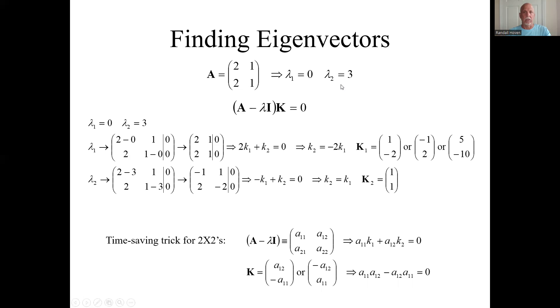Let's do the second eigenvector, which is three. Here I'm going to subtract three off the main diagonals. I'll end up with this augmented matrix. If I use the top row, this means minus k1 plus k2 equals zero. I could use the bottom row, but it's going to result in this equivalent relationship if I hadn't made any arithmetic mistakes.